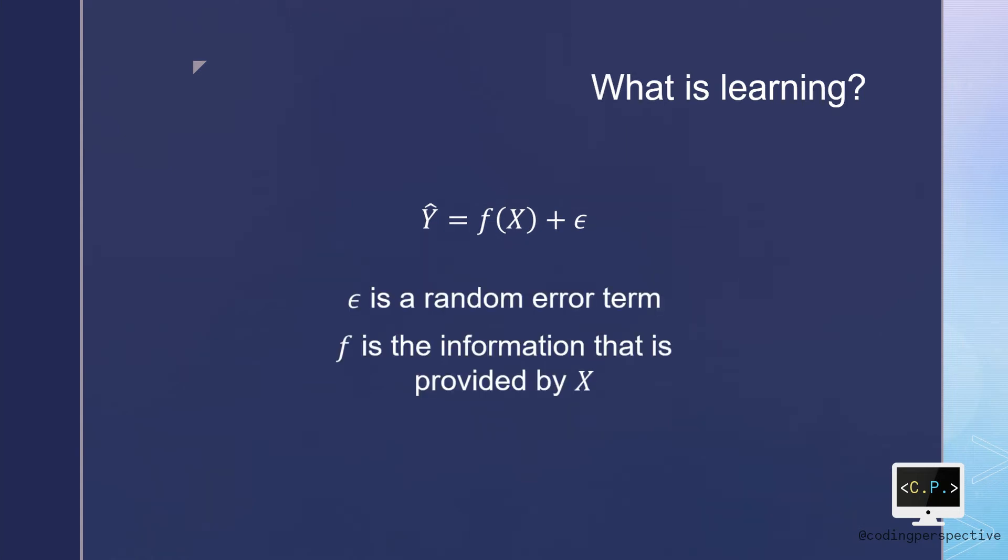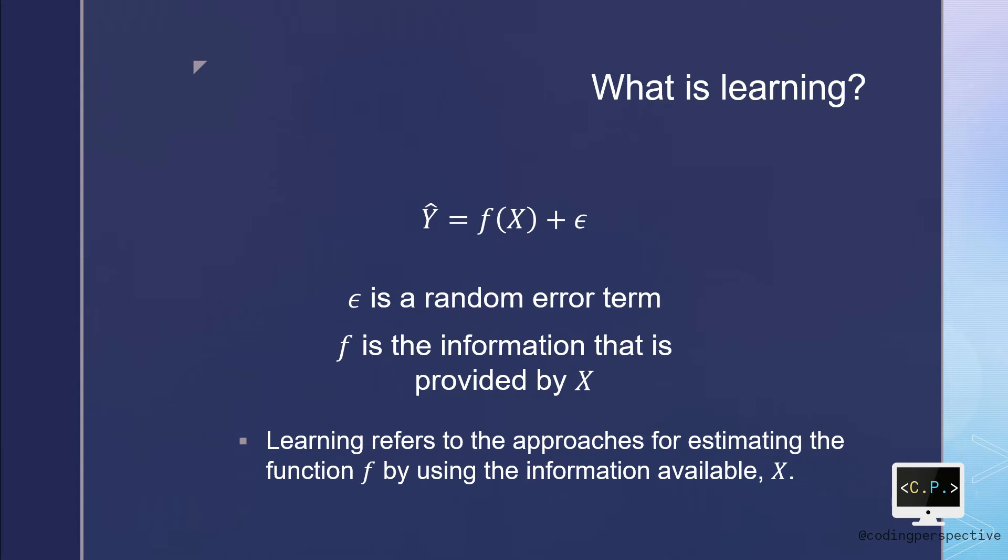In the previous slide, I said that we are formulating the learning task using the function f. In addition to that, for each prediction task, we assume that there exists a random error epsilon. We also assume that epsilon is independent of x and has zero mean value. In essence, learning refers to a set of approaches for estimating f.